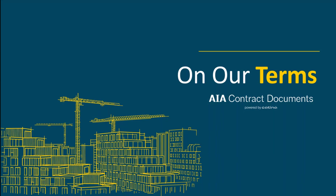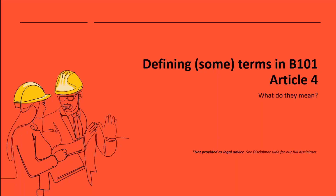Hello and welcome to another edition of On Our Terms, a video series by AIA Contract Documents. In this video, I will be talking about some of the terms in B-101, specifically Article 4. I'll be referring to B-101, but you will find these phrases in many other agreements in our library.